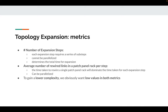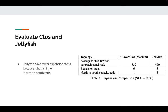The second expansion metric is the average number of rewired links in a patch panel rack per step. The time taken to rewire a single patch panel rack dominates the time for each expansion step. To gain lower complexity, we want low values in both metrics — few steps and few rewired links per patch panel per step. Let's compare Clos and Jellyfish using these two metrics, with SLO set to 90%.